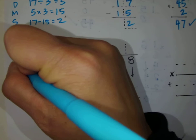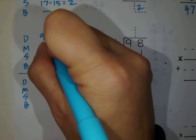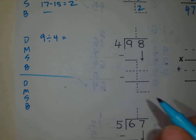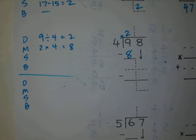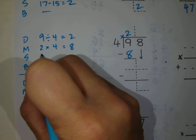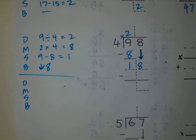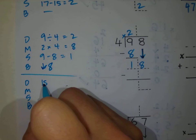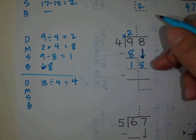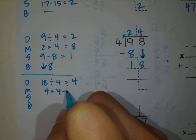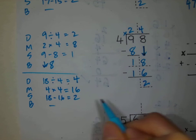Let's go on to the next problem: 98 divided by 4. I'm breaking down my steps for you so you can see play by play exactly what we're doing. The first step: 9 divided by 4 — how many groups of 4 can I make into 9? I know I can make 2, because 2 times 4 equals 8. Sister subtract: 9 minus 8 equals 1. Brother, bring down this 8 — I now have 18. New number: 18 divided by 4. How many groups of 4 can I make into 18? I know I can make 4 groups — 4 times 4 equals 16. 18 minus 16 equals 2. Brother has nothing left to bring down.